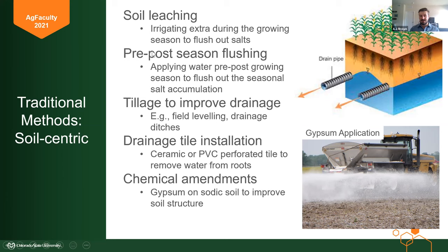That's also the principle of pre- and post-season flushing. As deficit irrigation becomes popular — meaning I don't get my full amount of water in a season because water is scarce — we want to make sure that in addition to meeting water requirements at the times plants most need it, we save enough water to flush out the salts, or at least have a plan to do it once every five years or so. If you do deficit irrigation every year, you'll leave more salt in the soil every year because the water won't push it beneath the roots, and it'll dry up and leave all those salts behind.